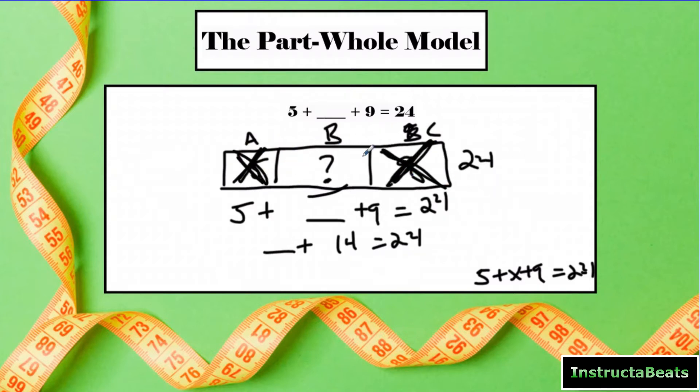So if you wanted to get rid of the nine and the five to find out what this question mark is, you're going to subtract them away from the whole. If you're getting rid of them, this is no longer 24.